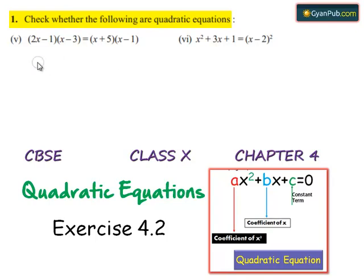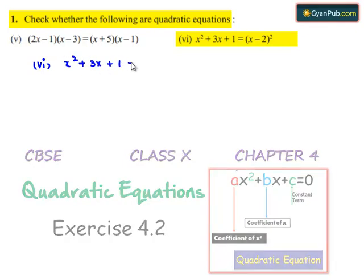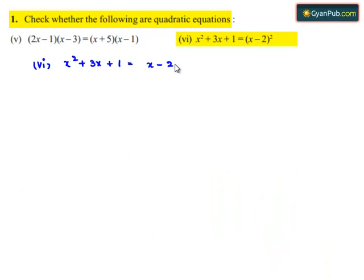Now, coming to the sixth part which is x square plus 3x plus 1 is equal to x minus 2 whole square.